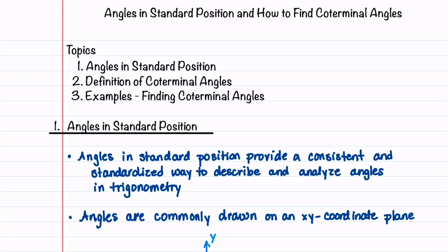Welcome to Understand the Math. In the video description, you'll find a link to guided notes that can be downloaded and filled in as you follow along with the video. In this video, I'm going to define what it means for an angle to be in standard position and complete some example problems on drawing an angle in standard position. I'll then define what coterminal angles are, outline the steps for finding them, and end by completing some example problems.